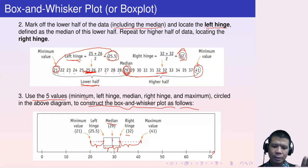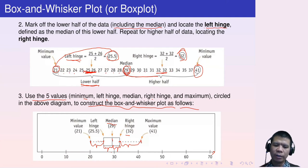The median separates the data into halves, and the left hinge separates the lower half into halves. So between 21 and 25.5 is the lower quarter; from the left hinge to the median is the second quarter; then the third and top quarters. Using these five numbers, we separate the whole dataset into four equal groups. These are the minimum, left hinge, median, right hinge, and maximum.